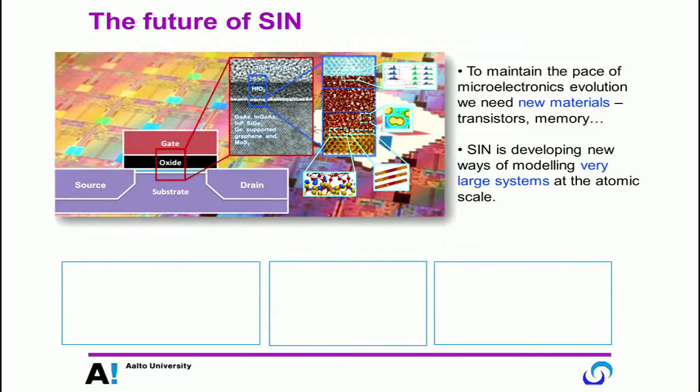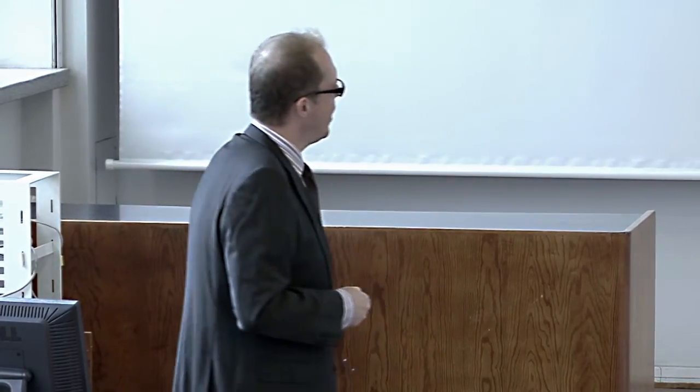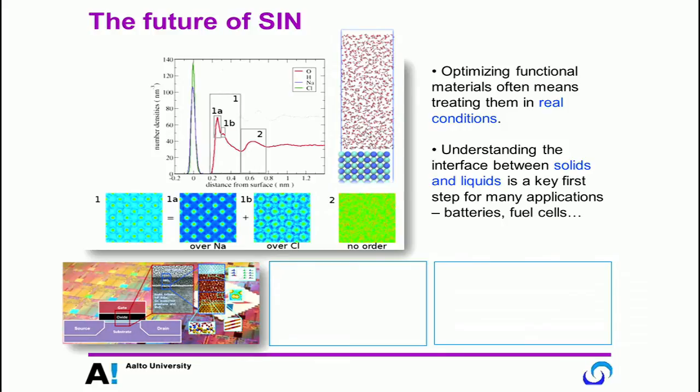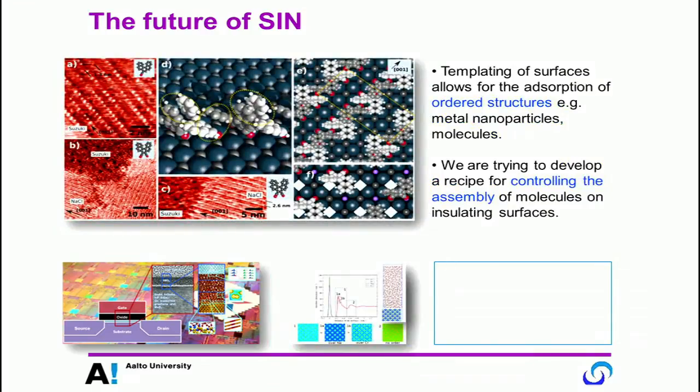In the last few minutes, I just mentioned a few things that we're working on later. So we're spending a lot of time now on microelectronics. So this is building very large models of interfaces to understand transistors with new materials. And this means we need to also develop new ways of calculating systems of thousands of atoms with very high accuracy. This earlier stuff we did in AFM water is now being expanded to look at solid-liquid interfaces in general. And this, again, requires that we really understand how to treat these systems with a very high accuracy.